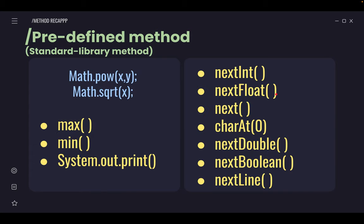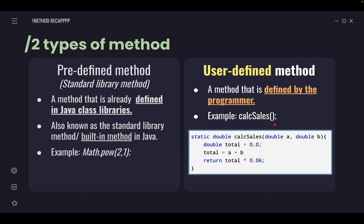Before that, we're going to do some recap first. As you all know, you have learned there are two types of methods: the predefined standard library method and the user-defined method where it's defined by the programmer. Other than Math.pow and Math.sqrt, there are a lot of other examples of standard library methods that we have used throughout this semester, such as Math.max, Math.min, System.out.print, nextInt, nextFloat, nextChar, nextDouble—all of these from the input statement. Today, stop talking about predefined; we're going to talk more on user-defined methods.